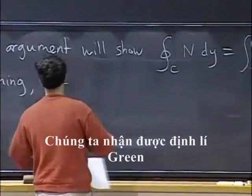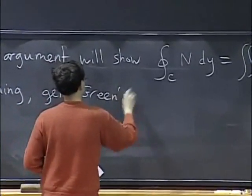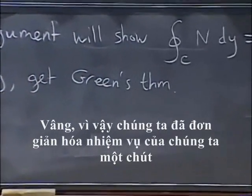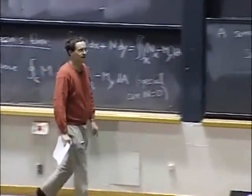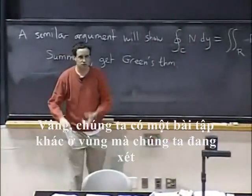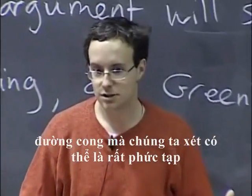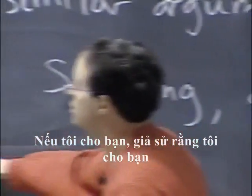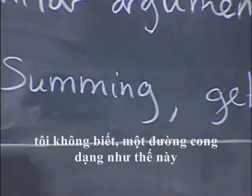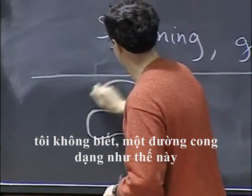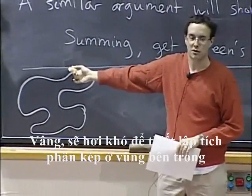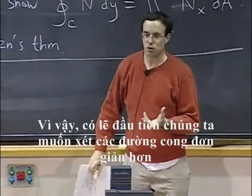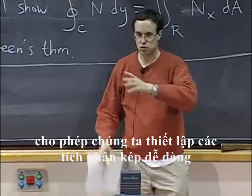So we have simplified our task a little bit. We will just be trying to prove the case where there is only an x-component. We have another problem, which is the region and curve we are looking at might be very complicated. If I give you a curve that does something like this, it would be kind of tricky to set up a double integral over the region inside. So maybe we first want to look at curves that are simpler, that will actually allow us to set up the double integral easily.